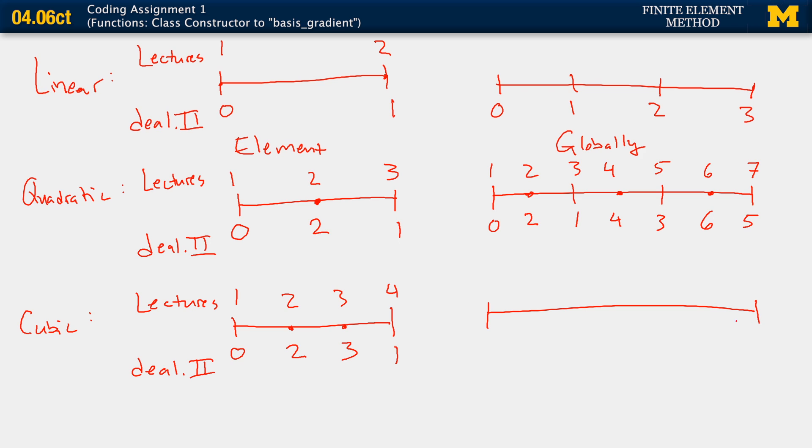And again, we'll do it globally as well. With two mid-side nodes, or two internal nodes per element. And I'm not going to bother with the lecture method. It's just sequential as before. But for deal.II, it's 0, 1. And then 2, 3 on the mid-side. 4, 5, 6, 7, 8, 9.